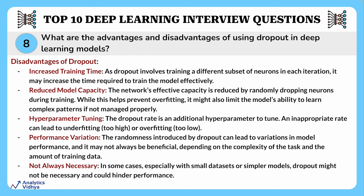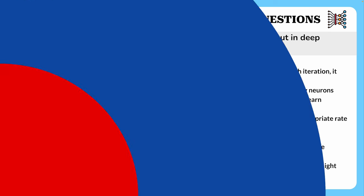The disadvantages of dropout are: it may increase the time required to train the model effectively, since a different subset of neurons is trained in each iteration; it reduces the network's effective capacity; the dropout rate is an additional hyperparameter to tune, and an inappropriate rate can lead to underfitting or overfitting; the randomness introduced can lead to variations in model performance; and sometimes dropout might not be necessary and could hinder performance.